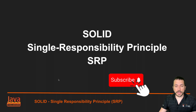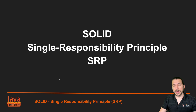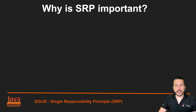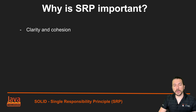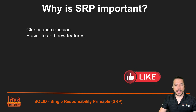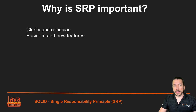Let's first explore the fundamentals of the single responsibility principle, and afterwards we're going to see the code example. So why is SRP important? Because by applying this concept you're going to have clarity and cohesion in your code, which means that your code will be very good at doing one thing. And it's also easier to add new features, because if your code is doing one thing very well, you're going to be able to fix that one thing and not a lot of features in just one method.